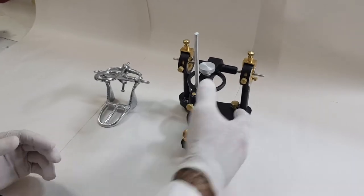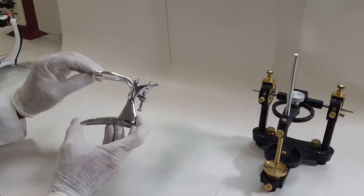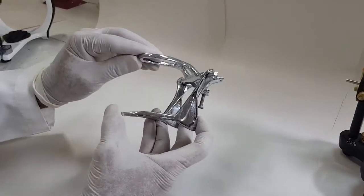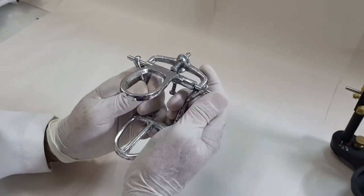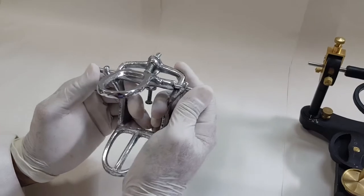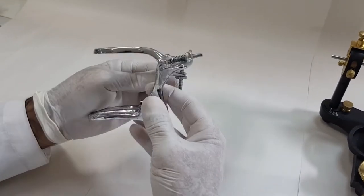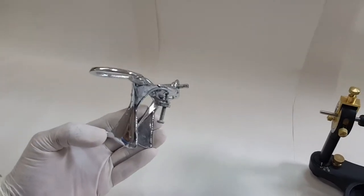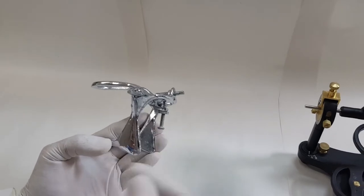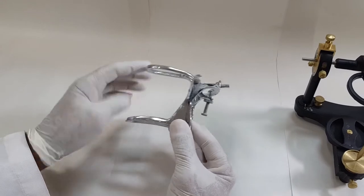The first simple articulator is a plain line articulator. This is a simple hinged movement articulator. It's only a hinge movement articulator. The other movement that can be performed is basically sidewise movement, but these are not the exact accurate movements. Remember, whenever you're using a plain line articulator for a simple single tooth replacement in a denture, yes, this articulator can help. For diagnostic purposes, yes, this articulator can help.